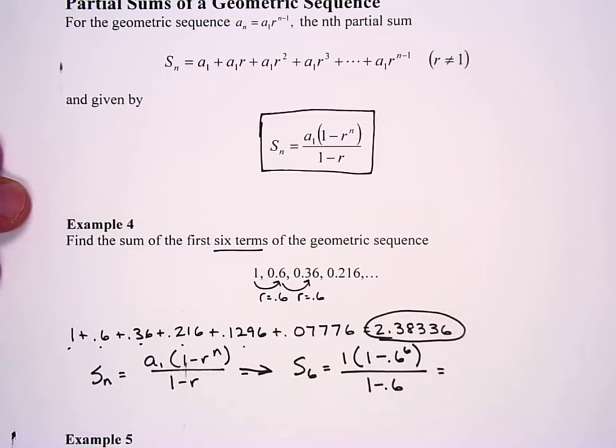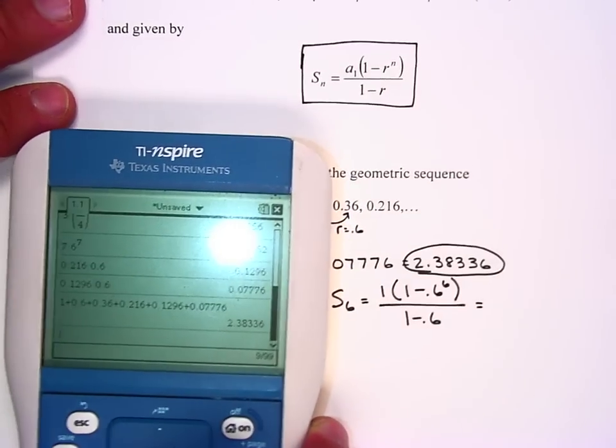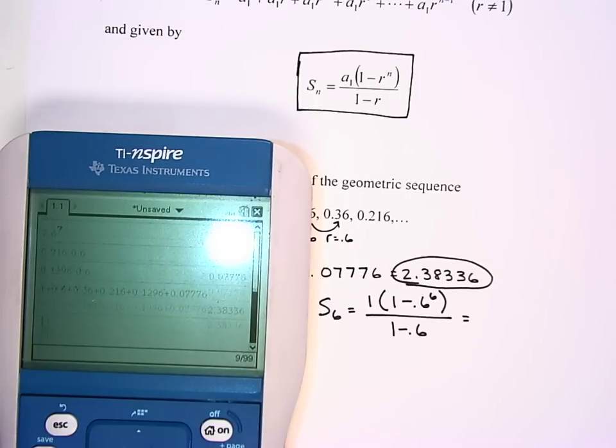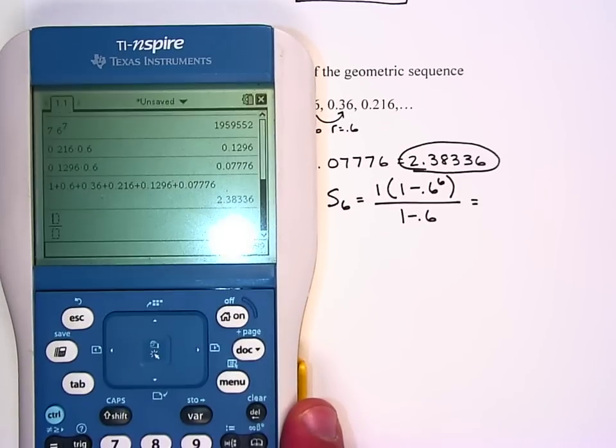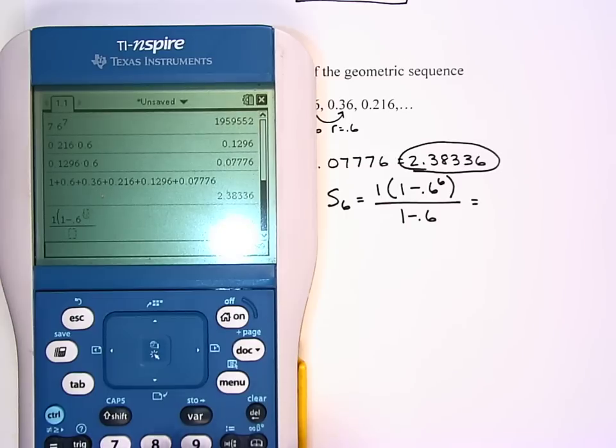I'm going to just plug that all into my calculator at once. This is where the Inspire comes in pretty handy. I'm just going to plug it in, do control fraction sign and just type in 1, parenthesis (1 - 0.6) to the sixth power, close the parentheses, go down to the bottom, 1 - 0.6.